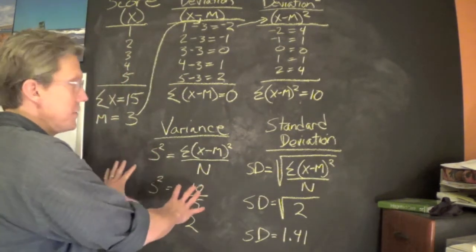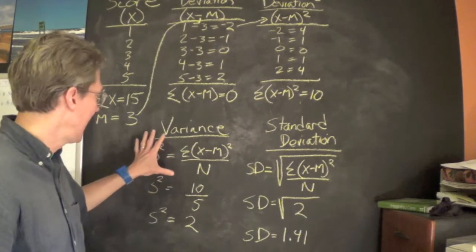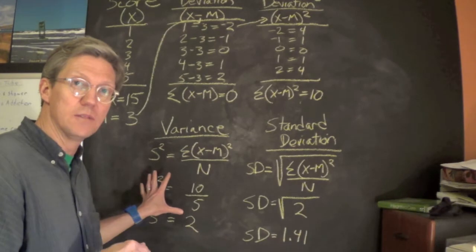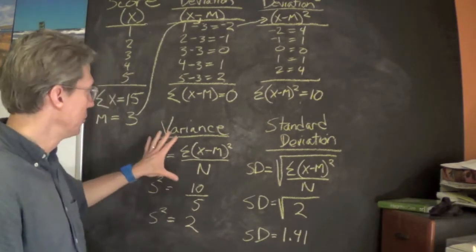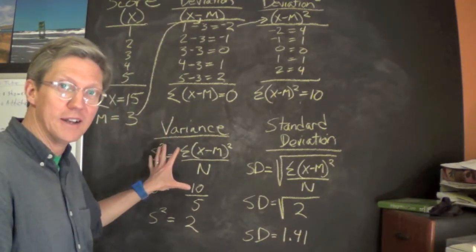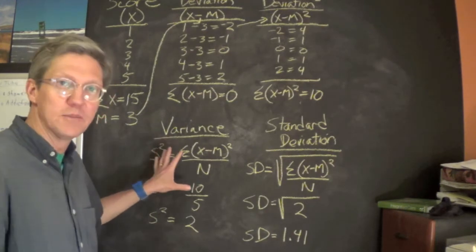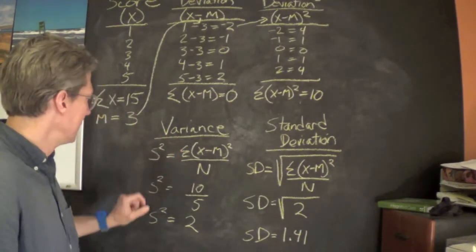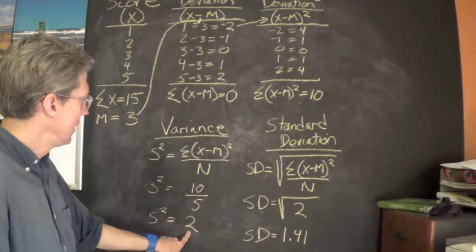It's important to understand how we get variance, particularly later when we're talking about correlations and coefficient of determination. This will be really important to keep in mind. It was a difficult concept for me to get until I went back to the formula, so remember this.